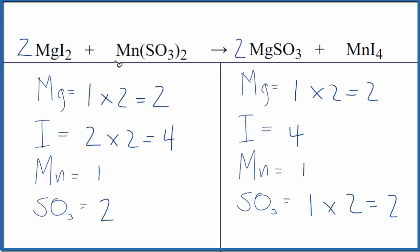The type of reaction here is double displacement. The magnesium and the manganese, they're switching places. So this is a double displacement reaction.